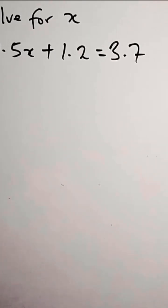The question says solve for S in this linear equation. So we have 0.5x plus 1.2 equals 3.7. How do we do this? Solution.